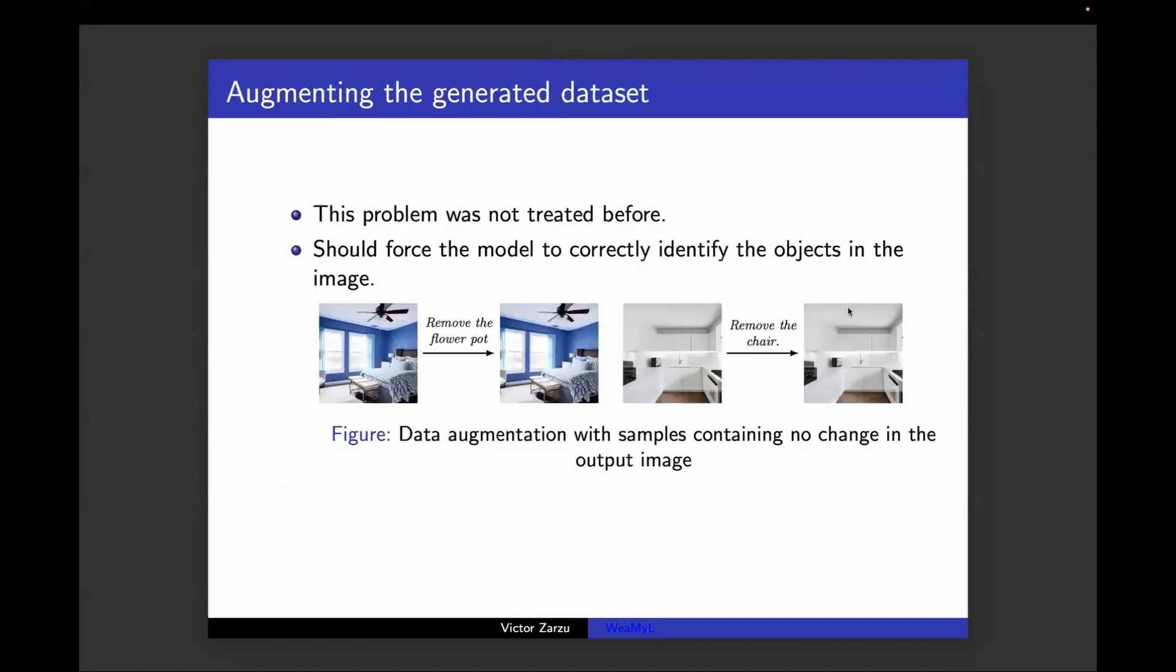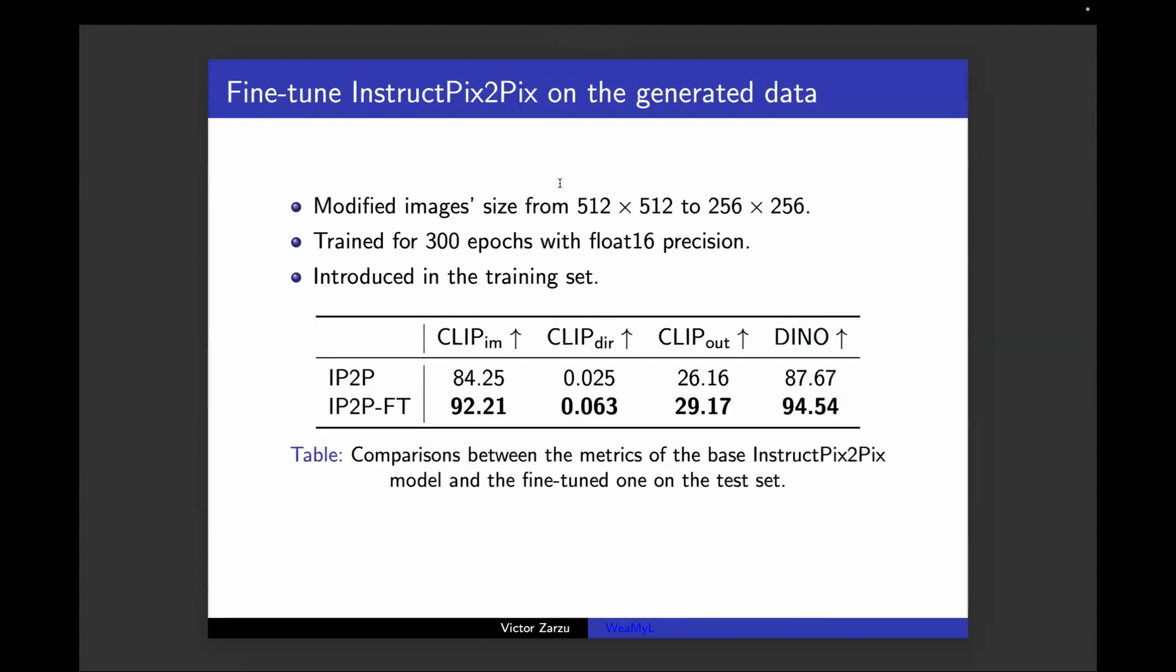We also tried to address a problem that was not addressed before, to also introduce in the dataset some samples that have an edit prompt that doesn't change the output image. For example, here we say remove the chair, but there is no chair in the image, so the output image needs to be the same as the original one.